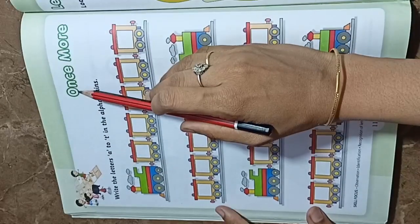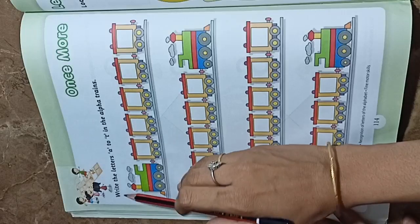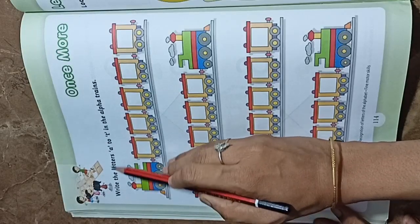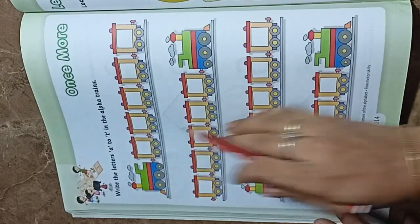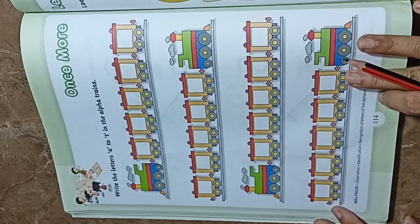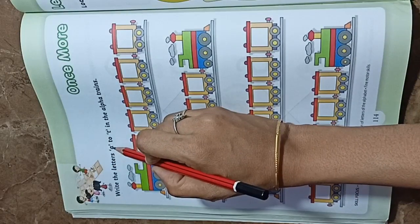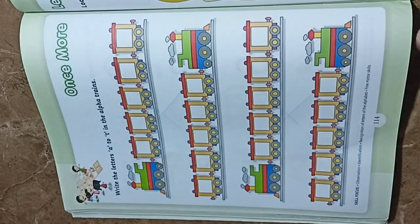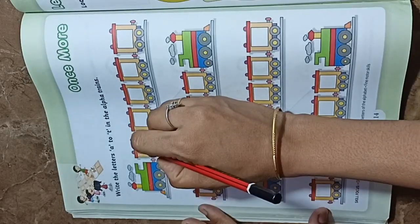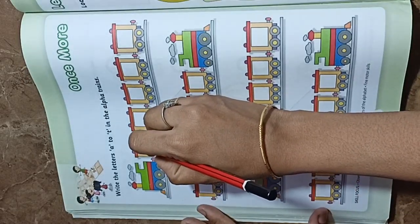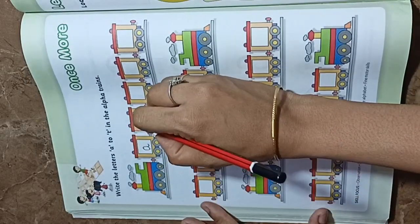Okay, let's move on the next page. Next page is once more. What we have here? Write the letter A to T in the alpha train. Let's move on from A to T alphabets. But here we have mentioned here we will write in small letters.